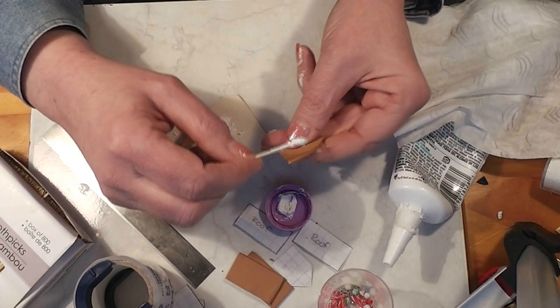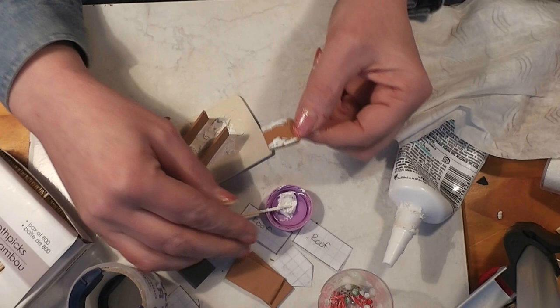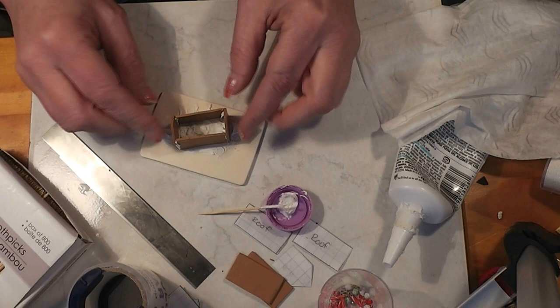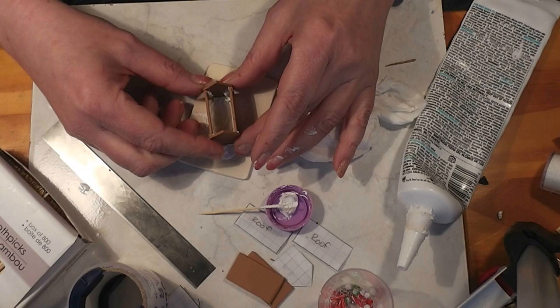Now I take some more of this and I put it where I figure the ends of those sidewalls are going to hit my end wall. Okay, now wipe your hands off so you don't get caulking all over your house. Hopefully that's fairly square, fairly good corners. You can still adjust it.